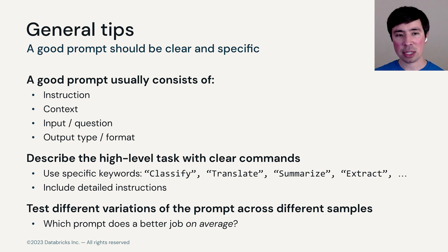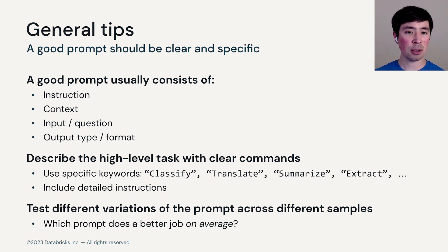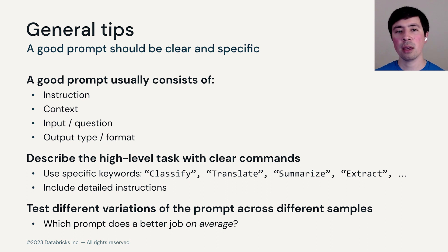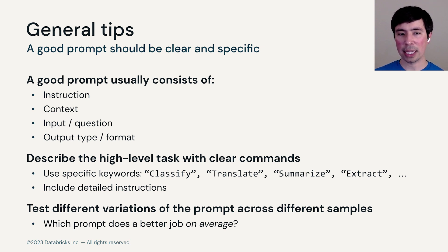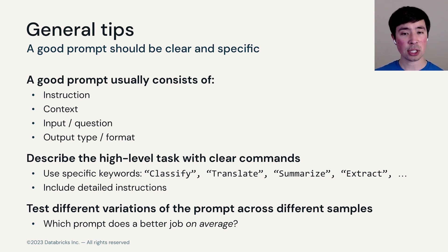Let's start with some general tips around how a good prompt needs to be clear and specific. Just like when you ask a human to do something, you need to be clear and specific — that helps with LLMs as well. A good prompt often consists of an instruction, some context or background information, an input or question, and an output type or format. You should describe the high-level task with clear commands — that may mean specific keywords like classify, translate, and so on — or including detailed instructions.